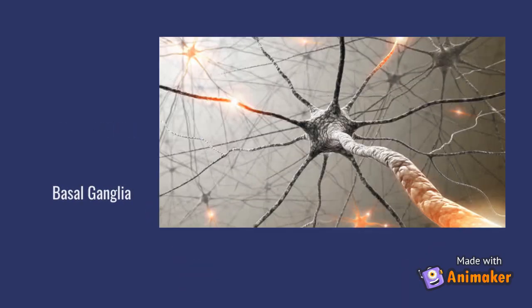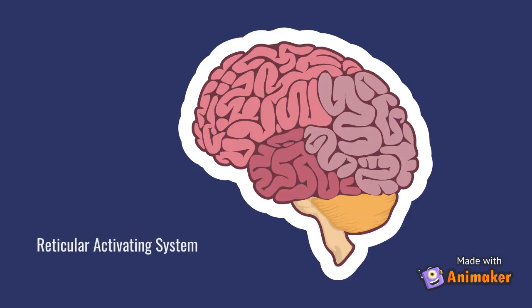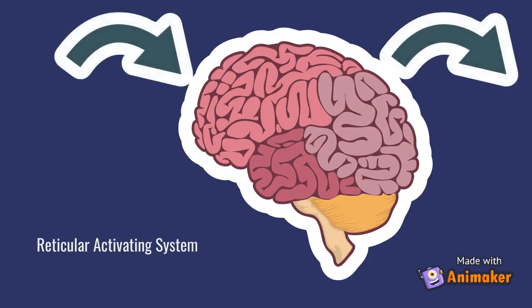The basal ganglia are neural circuits that regulate communication within the brain. A deficiency in the basal ganglia can cause information to short circuit, resulting in inattention or impulsivity. The reticular activating system is the major relay system among the many pathways that enter and leave the brain. A deficiency in the reticular activating system can cause inattention, impulsivity, or hyperactivity.